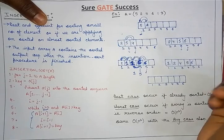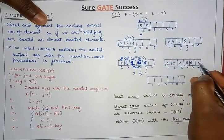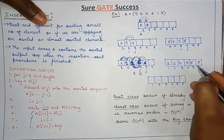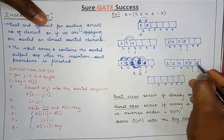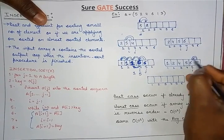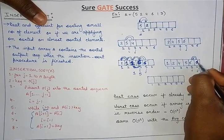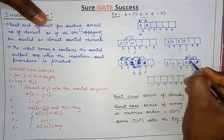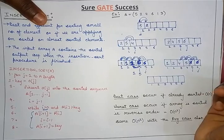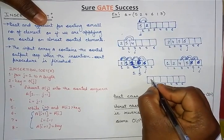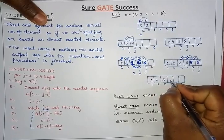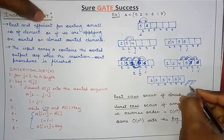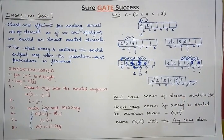Finally, we insert the last element, which is 3. j points to its position and i is the previous position. We find that 3 is smaller than the current a[i], so we swap. We keep checking and swapping until the correct position is found. Finally, we get the fully sorted sequence: 1, 2, 3, 4, 5, 6. In the same way, cards are sorted — we take a card from the table and place it at the correct position.